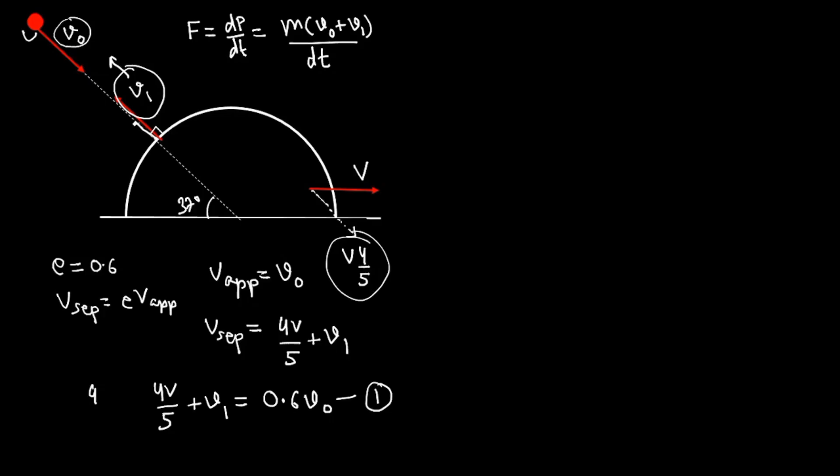By Newton's third law, equal and opposite force must have acted on the hemisphere. Let's draw the force diagram. This is the force F which acts on the hemisphere for a very short interval dt, that's why we are calling it impulse. This will have two components: one horizontal F cos 37° = 4F/5, and the vertical component 3F/5.